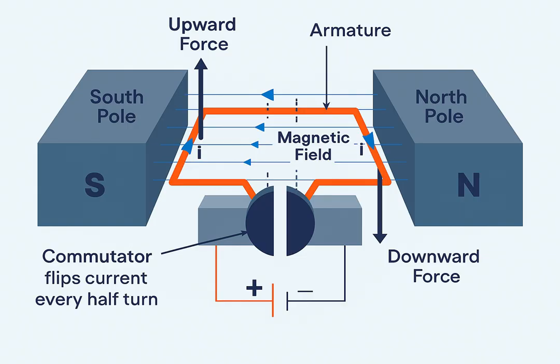Step 4: Continuous Rotation is Maintained. Thanks to this precise switching action, the torque generated by the interaction of magnetic fields always pushes the rotor in the same rotational direction. This results in a smooth, continuous spinning motion, which is the primary output of the motor.